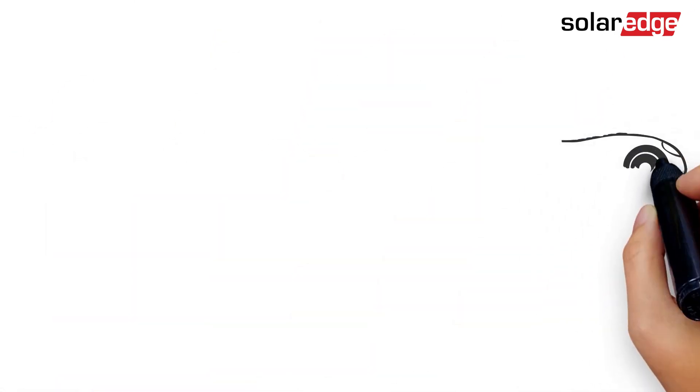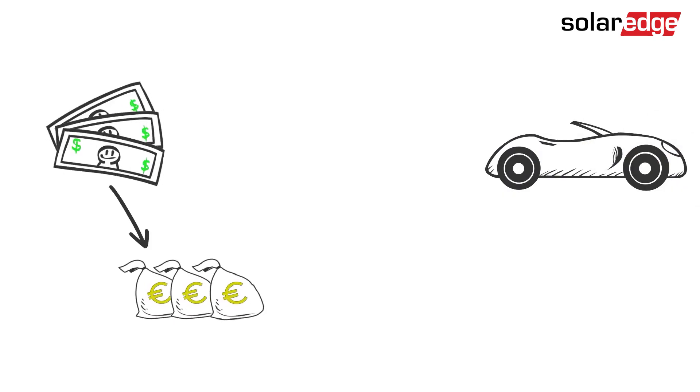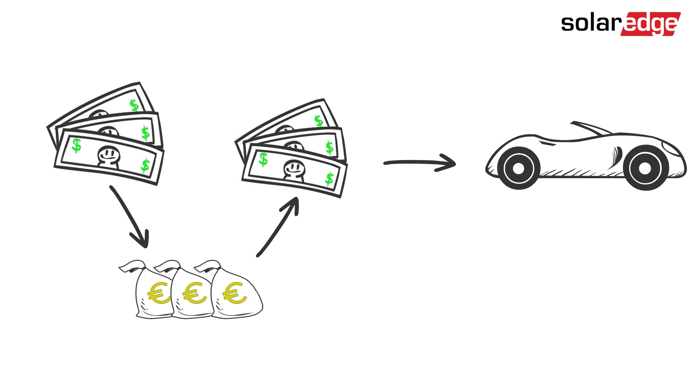To put it another way, let's say you want to buy a car, but first you have to convert your money to another currency and then back to your own currency to make the purchase. Not very efficient, right? That's what happens with AC coupling.